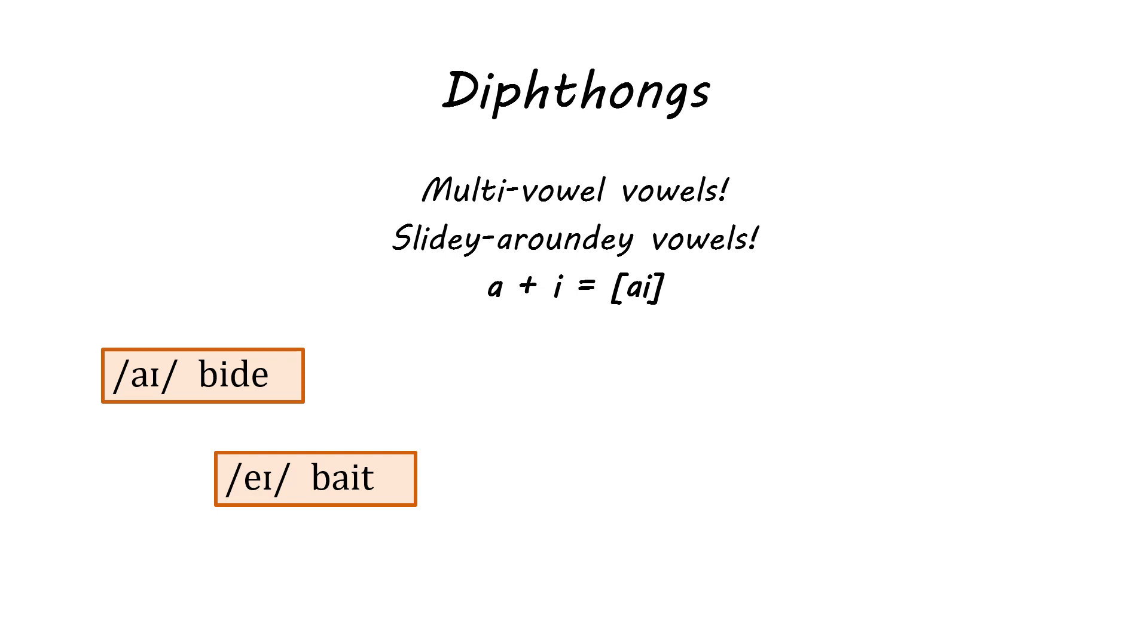This one is eɪ. Now this is one that depending on your dialect of English you may pronounce the word bait as beit. It's mostly I think British dialects. Some British dialects still have that pure e pronunciation. And if you do that then you're really pronouncing the word as not a diphthong. But most Americans pronounce this word bait as beɪt.